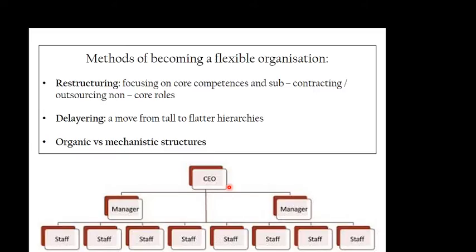In terms of restructuring, in the 1980s and 90s many organisations had got very big. For example, schools employed cleaners and canteen staff, when really the core business of a school is teaching — and equally, businesses were employing cleaners and canteen staff. There was a refocusing in the 1990s on core competencies: what are we really good at, how can we focus on that more, and allow other organisations that specialise in these areas to focus on our non-core activities?